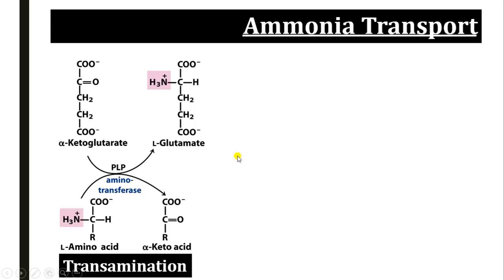This removal of the amino group is done by the transamination reaction. Transamination is the transfer of an amino group from an amino acid to a ketoacid, resulting in formation of a new amino acid and a new ketoacid. The amino group of the amino acid is transferred to alpha-ketoglutaric acid, which gets converted to glutamic acid, while the original amino acid becomes a ketoacid. This transamination reaction requires pyridoxal phosphate as a coenzyme.